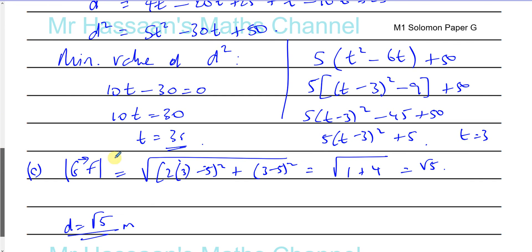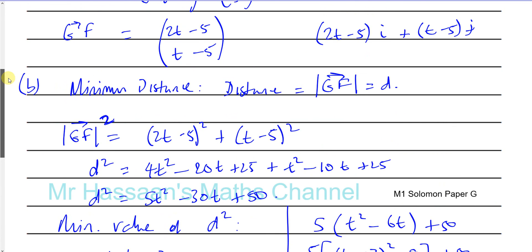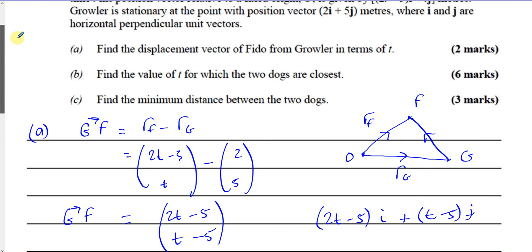And that's exactly what we get from completing the square: t equals 3 and D squared equals 5, so d equals root 5 meters. Completing the square gives you both of those answers straight away — t equals 3 and d equals root 5. So there we have the answers to parts a, b, and c of that question. Thank you for watching.